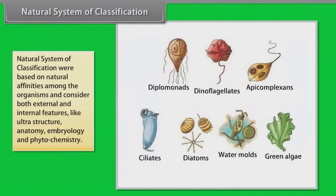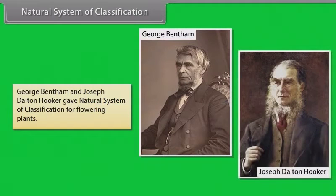Natural system of classification were based on natural affinities among the organisms and consider both external and internal features like ultra-structure, anatomy, embryology, and phytochemistry. George Bentham and Joseph Dalton Hooker gave natural system of classification for flowering plants.